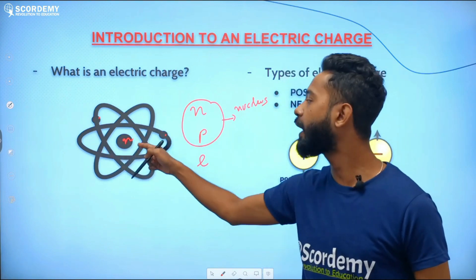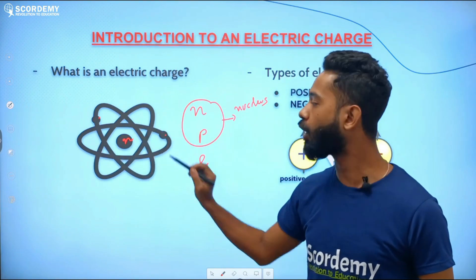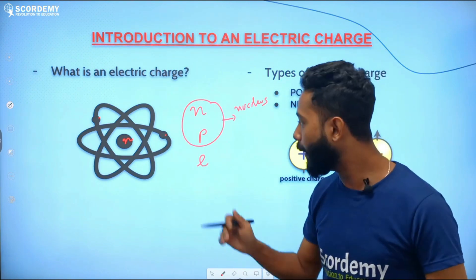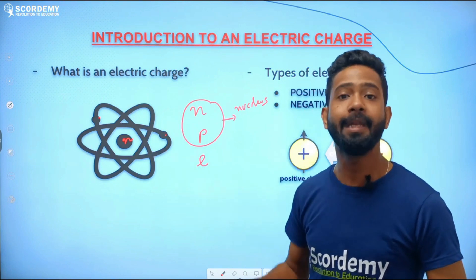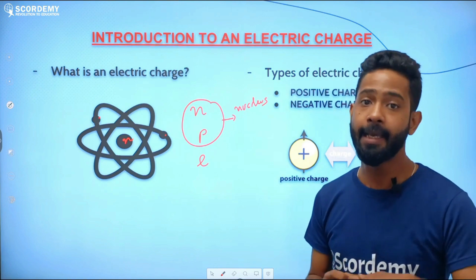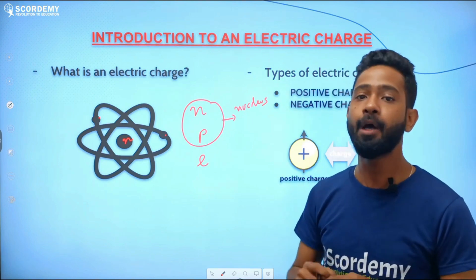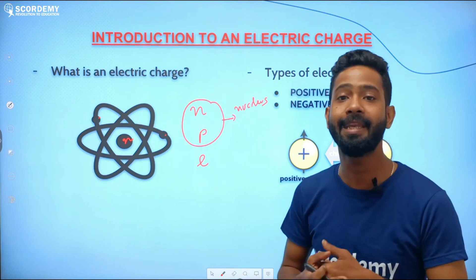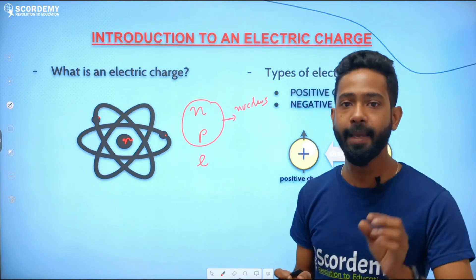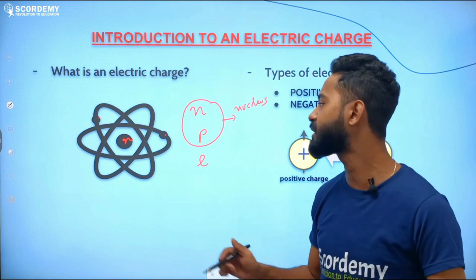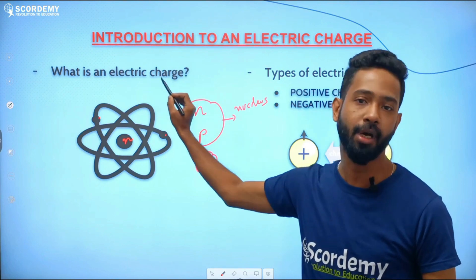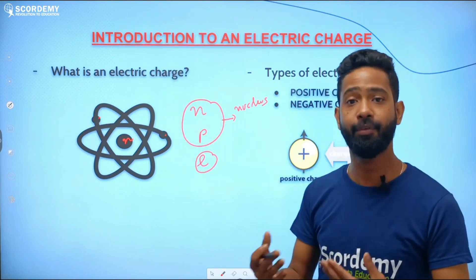Since electrons revolve around the nucleus, they are at a far distance from the neutron or proton, so electrons have a tendency to get knocked out. When these electrons get knocked out, they can freely move. Those freely moving electrons can give rise to electric charges as well as electric current. So the origin of electric charge starts from the electron.